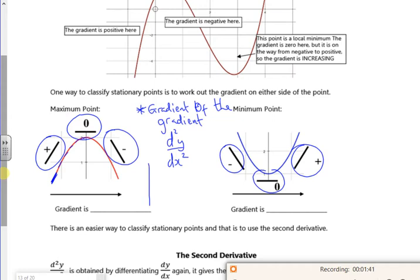So, if I was to kind of graph what the gradient looks like, it would be kind of positive, but it's getting smaller. And then at some point, I hit the stationary point where the gradient is zero.